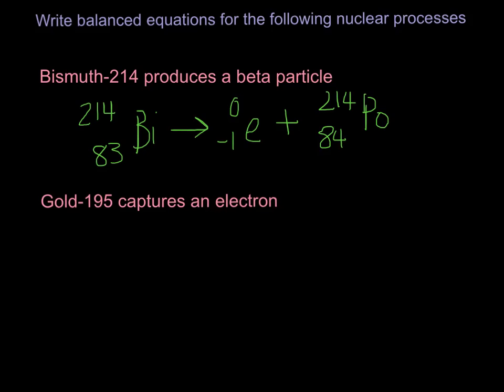All right. Now, in the second example, we have gold, which has the symbol Au, and this is number 79 down at the bottom, and it has a mass of 195. Now, in this case, it says it's capturing an electron, so we're going to fill in our electron on this side. 79 minus 1, 78. 195 plus 0, 195. And then on my periodic table, I look up 78, which is platinum.